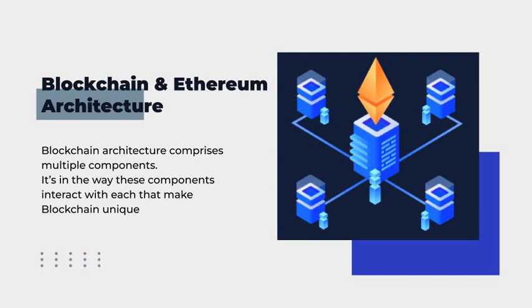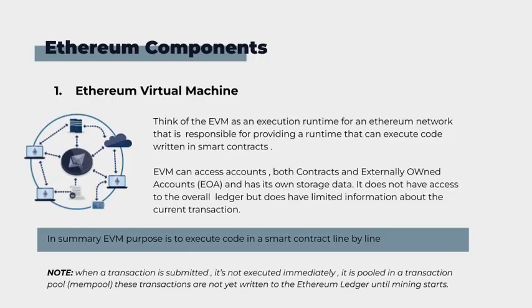Some of the Ethereum components we are going to talk about include the Ethereum Virtual Machine. Think of the EVM as an execution runtime for the Ethereum network that is responsible for providing a runtime that can execute code written in smart contracts. The EVM can access accounts — both contract and externally owned accounts — and has its own storage data. It does not have access to the overall ledger but does have limited information about the current transaction.